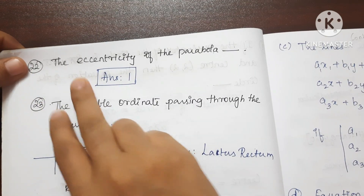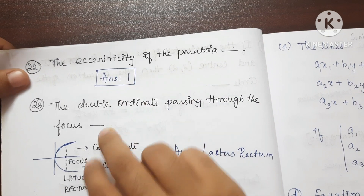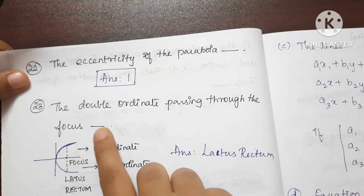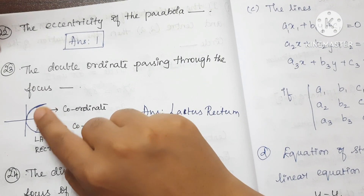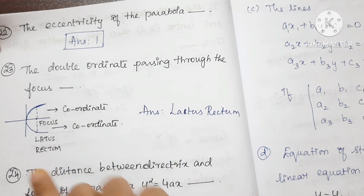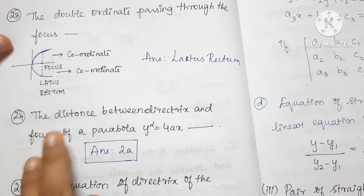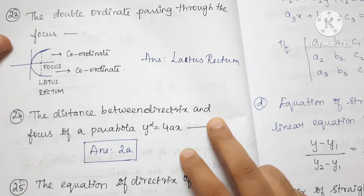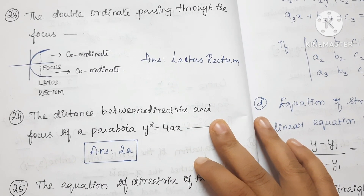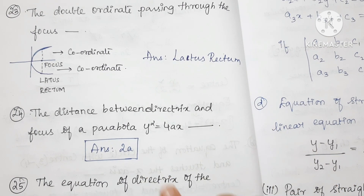Question 22: The eccentricity of a parabola — answer is 1. Question 23: The double ordinate passing through the focus is the latus rectum. Question 24: The distance between the directrix and the focus of the parabola y²=4ax is 2a.